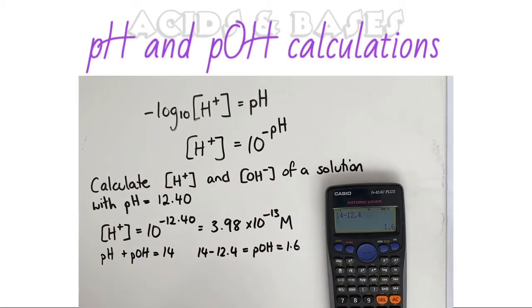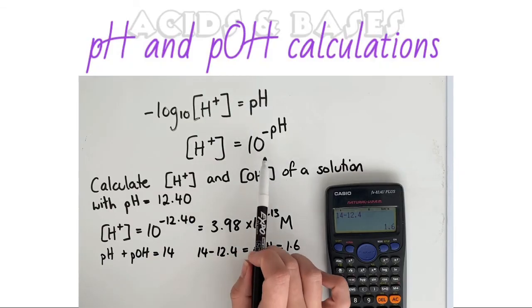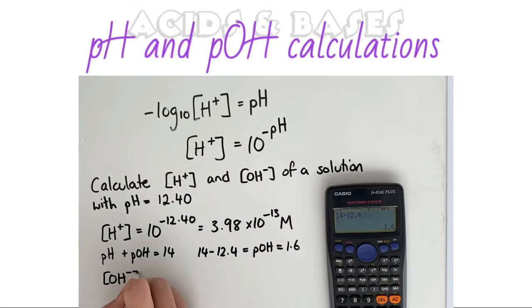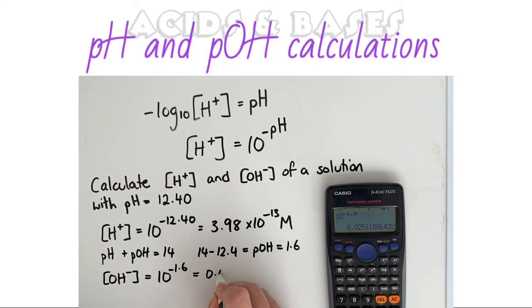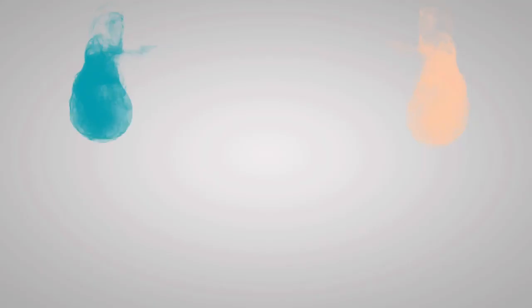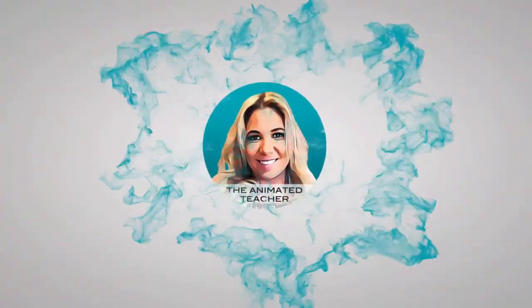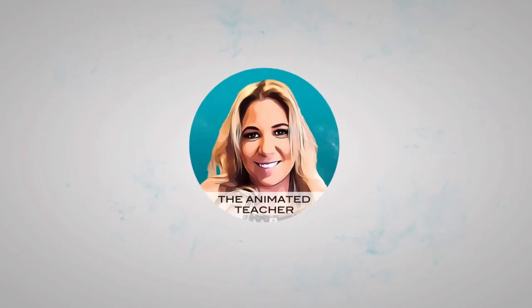So our pOH value is 1.6. Now we can use the similar equation to this, but this time we're doing the concentration of the hydroxide ions will be the equivalent of 10 to the minus pOH, 1.6.